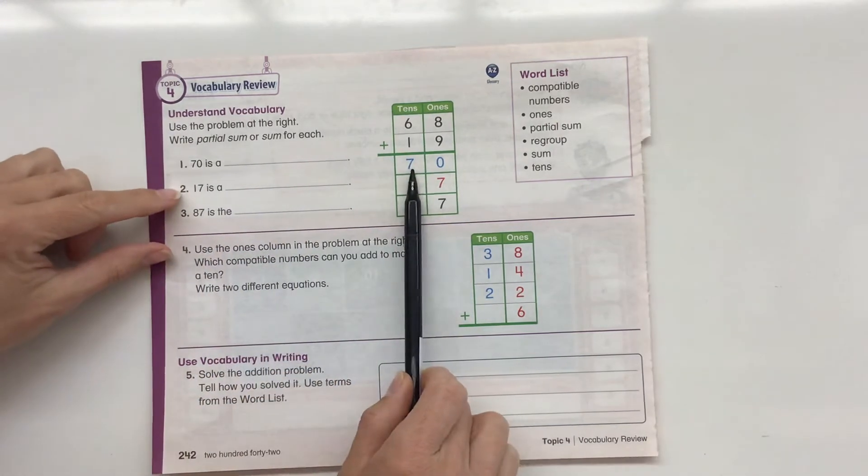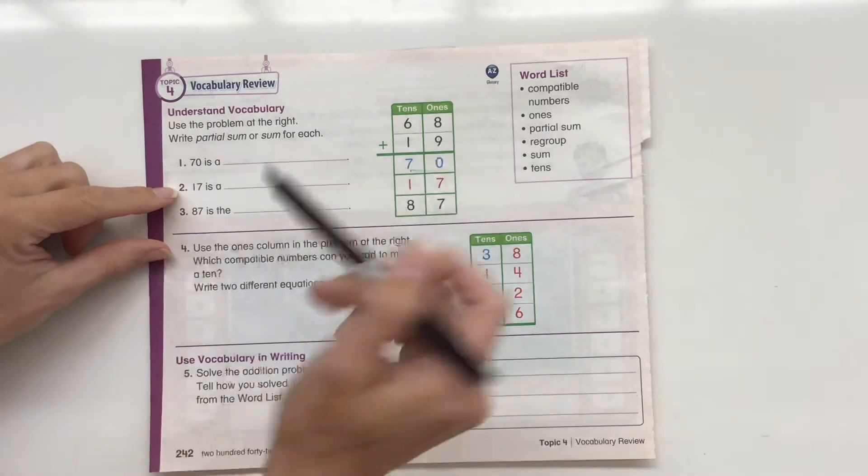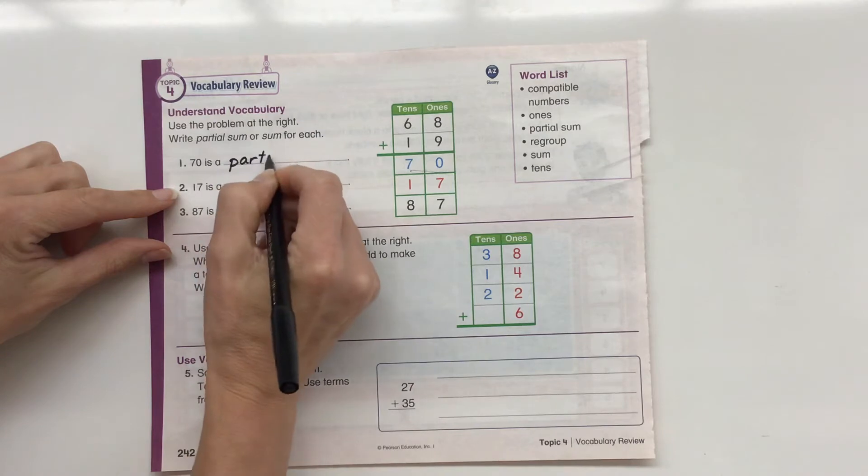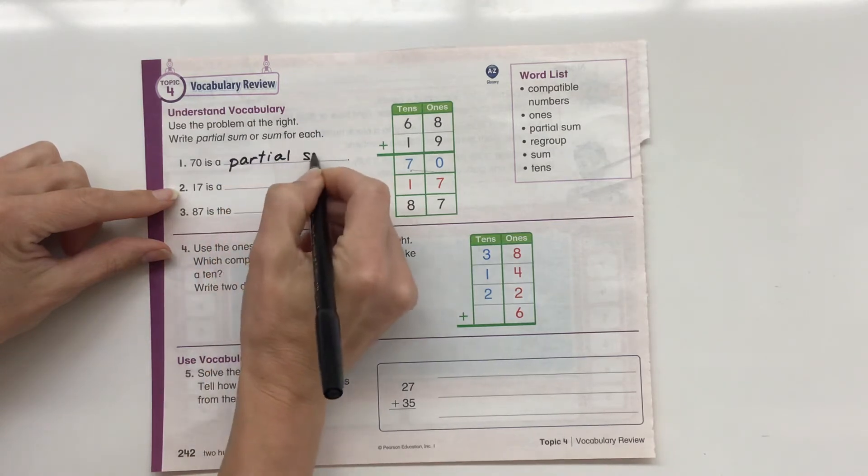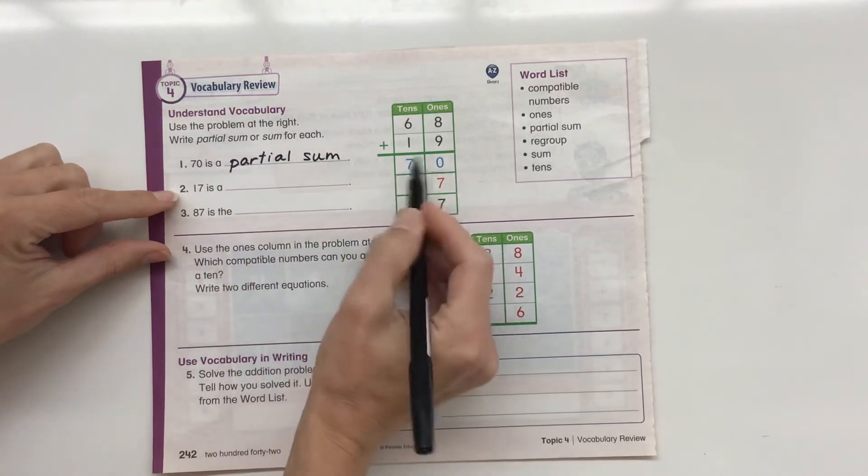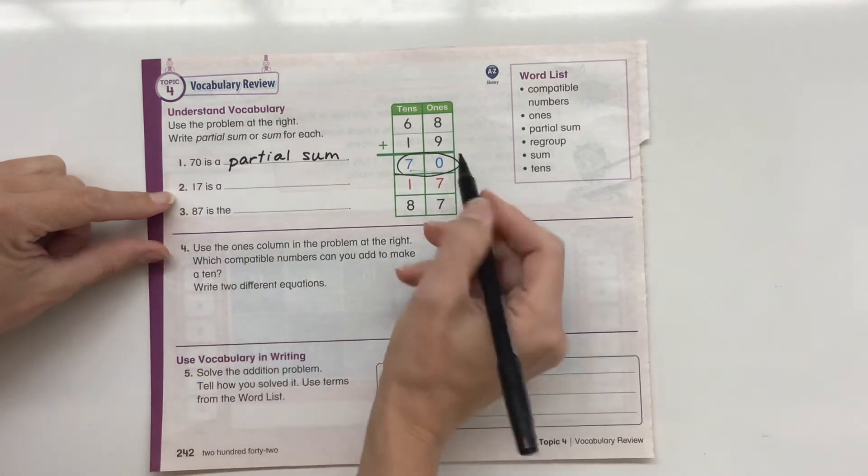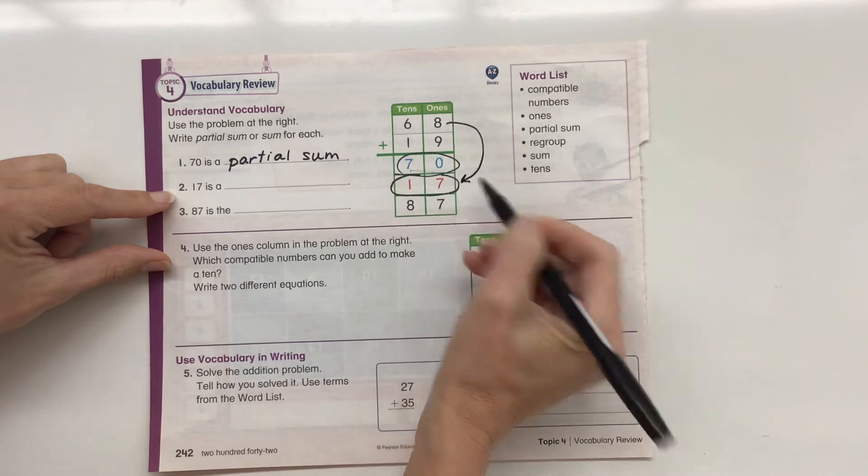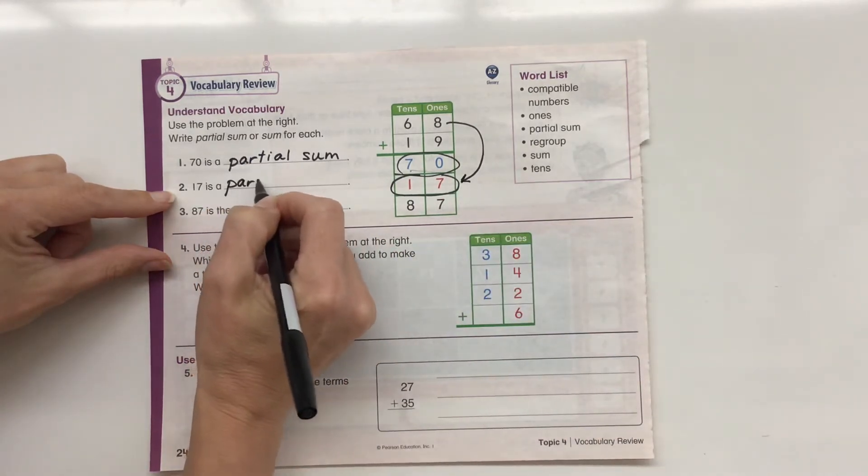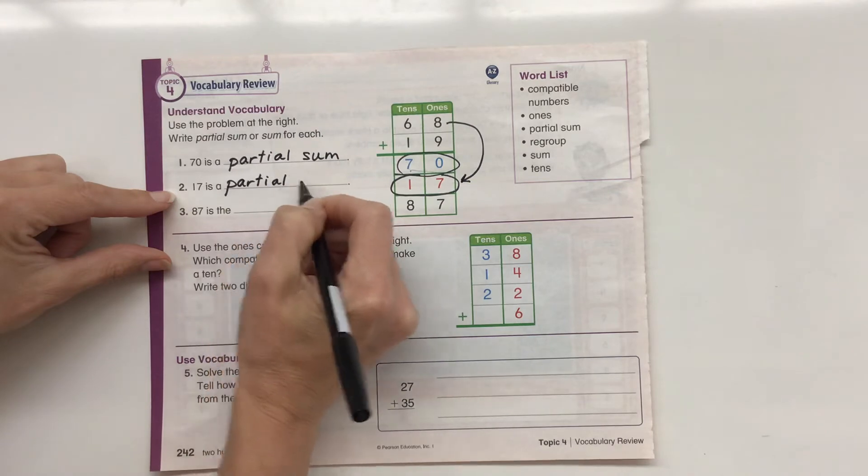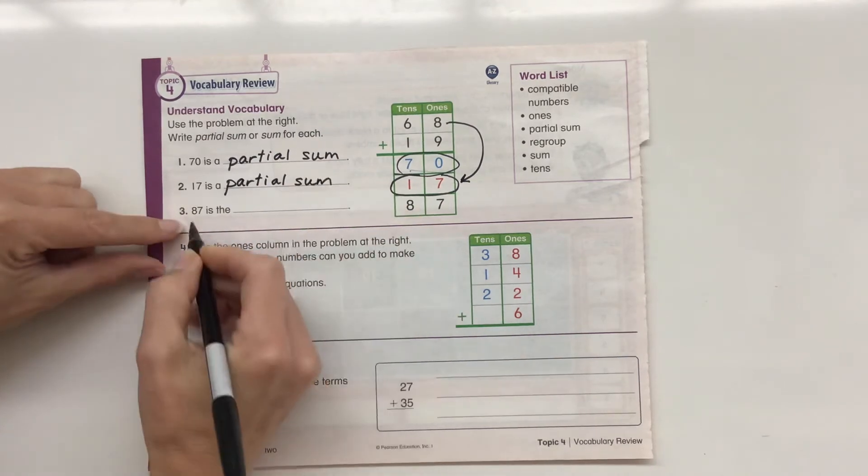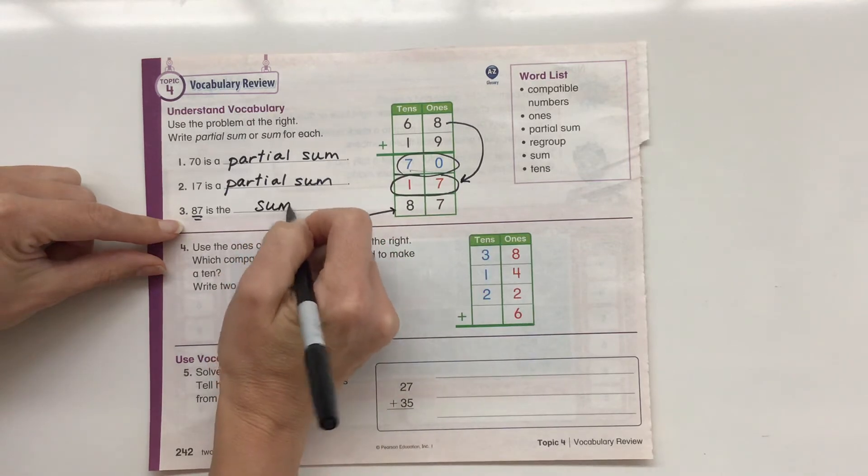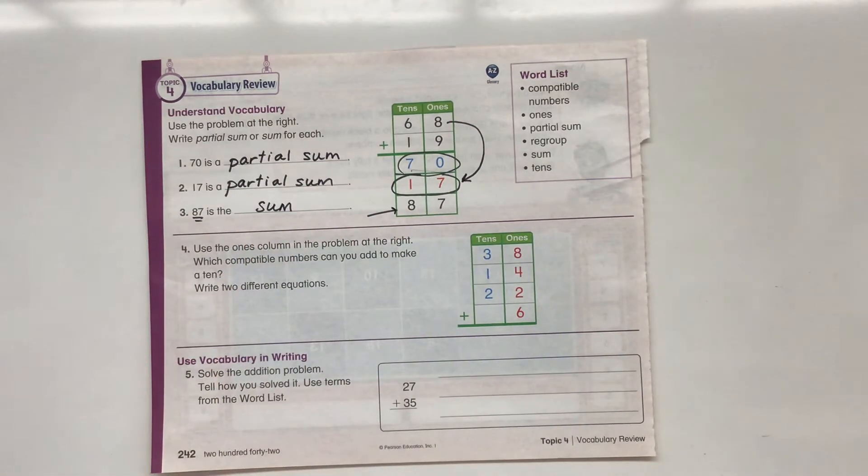So 70 is a what? Well, 70 is a partial sum because it's just the tens. So we're going to write partial sum because that's just part of it. 17 is also a partial sum because that is just what the ones add together. So we're also going to write partial sum. But 87 is the total sum, right? So we're going to write sum for that one.